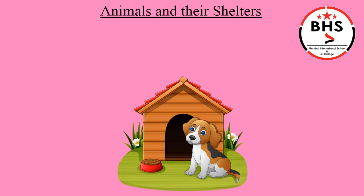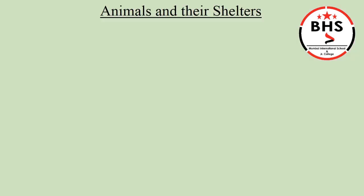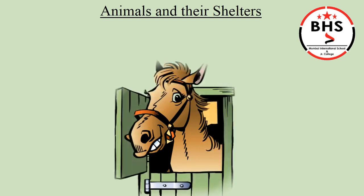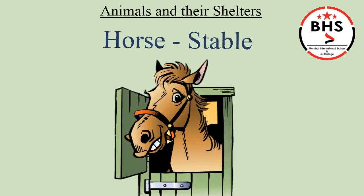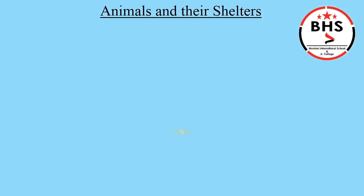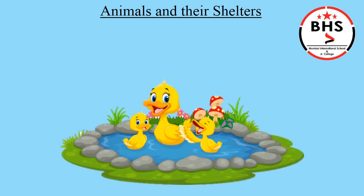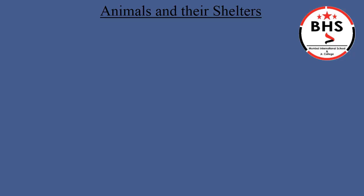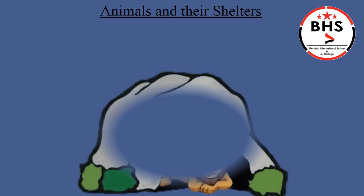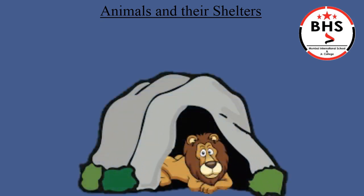The house of dog is kennel. The house of horse is stable. The house of duck is pond. The house of lion is den.